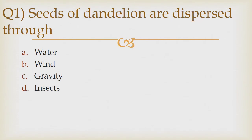Question 1: Seeds of dandelion are dispersed through option A water, option B wind, option C gravity, option D insects. The correct answer is option B wind.